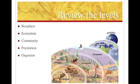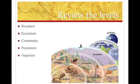So the first thing we want to do is review the levels. We have the individual organism, the smallest thing; population is a group of the same species; community is all the biotic things living in that area, so different plants and animals; ecosystem includes all of the biotic and abiotic aspects of that area; a biome is a specific type of ecosystem; and then your biosphere, which is your whole world and the atmosphere surrounding it.